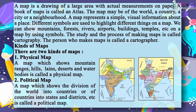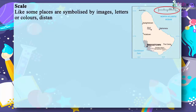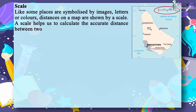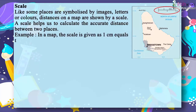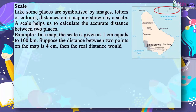Scale. Like some places are symbolized by images, letters, or colors, distances on a map are shown by a scale. A scale helps us to calculate the accurate distance between two places. For example, in a map the scale is given as 1 cm equals 100 km. If the distance between two points on the map is 4 cm, then the real distance would be 400 km.